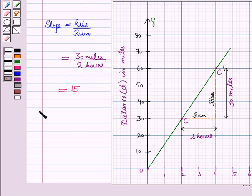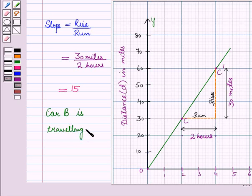So here we can write that car B is travelling at the rate of 15 miles per hour.